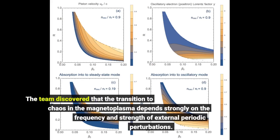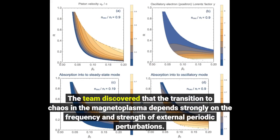The team discovered that the transition to chaos in the magnetoplasma depends strongly on the frequency and strength of external periodic perturbations.